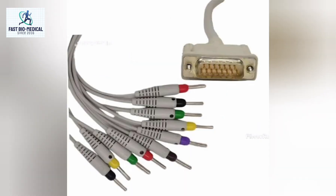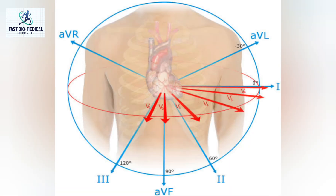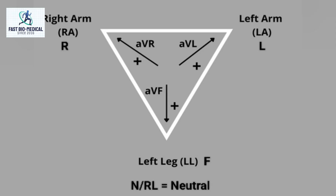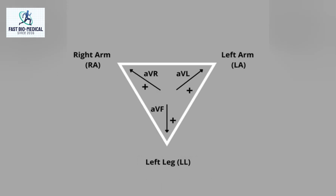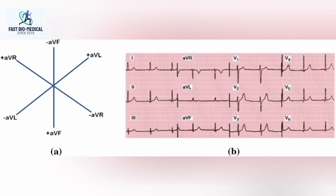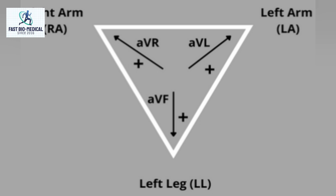These 10 leads are used to get 12 readings or acquisitions from the patient. The chest electrode gives 6 readings: V1, V2, V3, V4, V5, and V6. The limb electrode is used to derive the remaining 6 readings, in which N or right leg is referred to as a neutral point. The remaining 3 limb leads are used to get AVR (augmented vector right), AVL (augmented vector left), and AVF (augmented vector foot), as seen on the display.